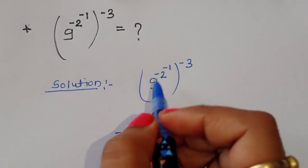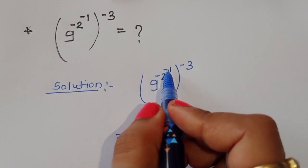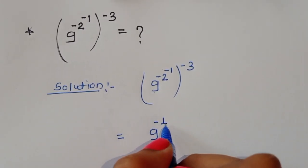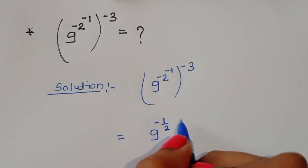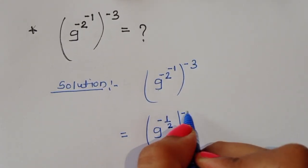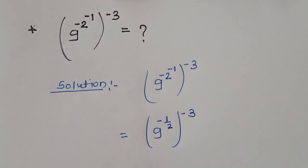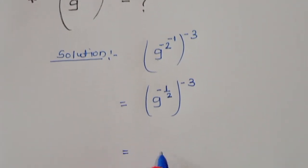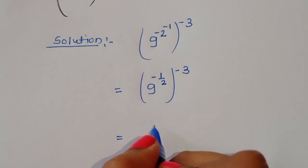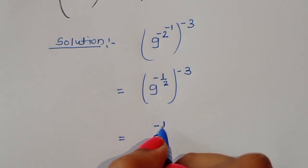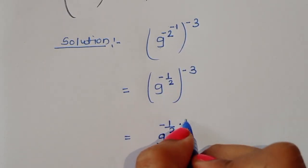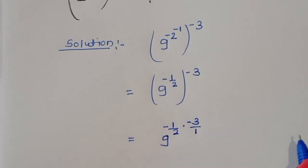We have 9 power (minus 2 power minus 1), all to the power minus 3. Now, minus 2 power minus 1 can be written as minus 1 over 2. So the expression becomes 9 power (minus 1 by 2), all to the power minus 3.